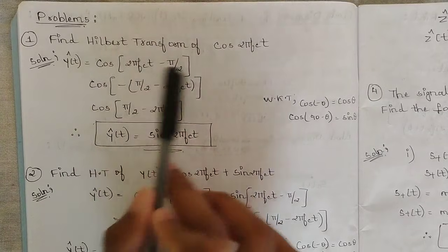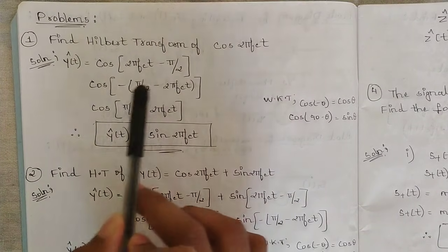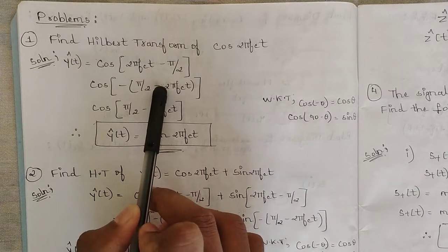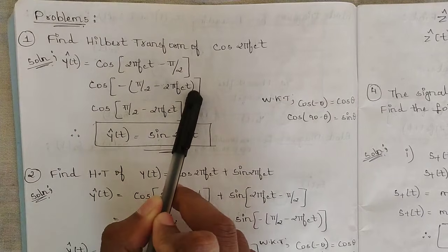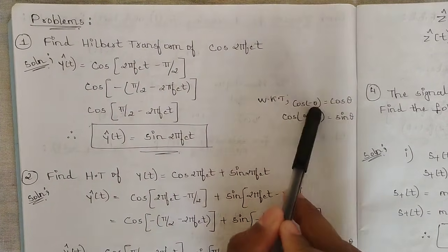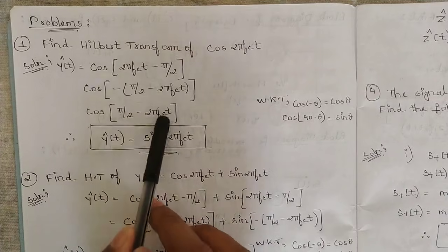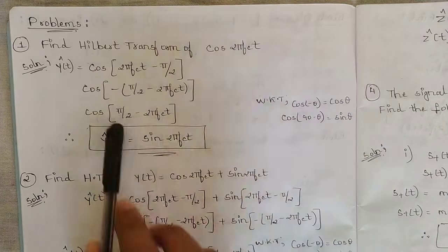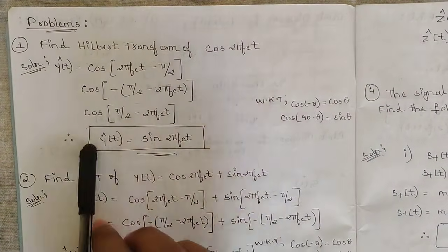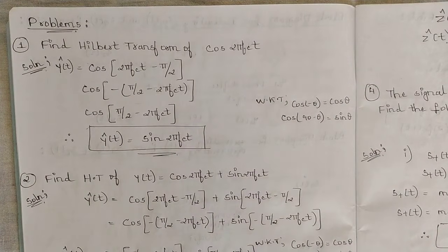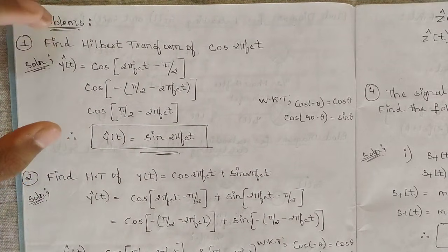Now I interchange the terms: writing (−π/2 + 2πfct), then taking minus common outside, giving cos(−(π/2 − 2πfct)). Using the trigonometric identity cos(−θ) = cos θ, we get cos(π/2 − 2πfct). Since cos(90° − θ) = sin θ, the final Hilbert transform is ŷ(t) = sin(2πfct). For simple cos and sin functions, you can conclude the answer in 3 to 4 steps.